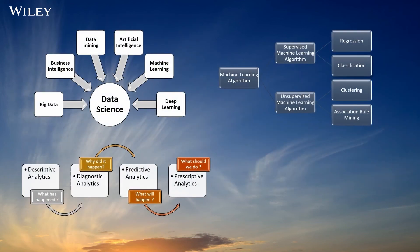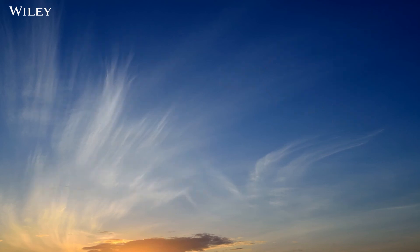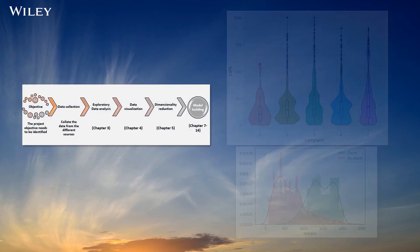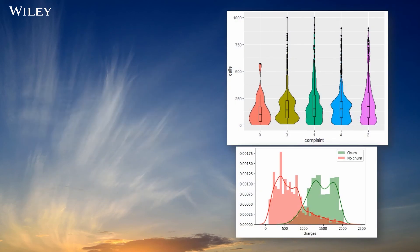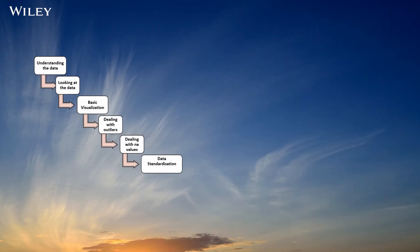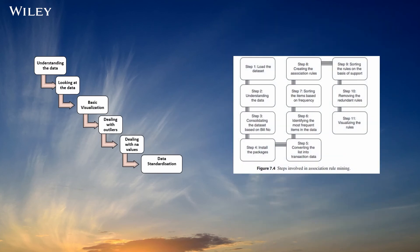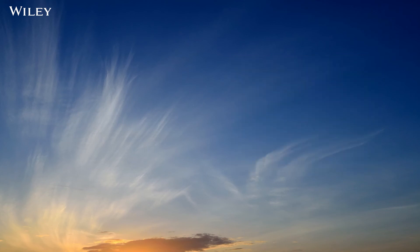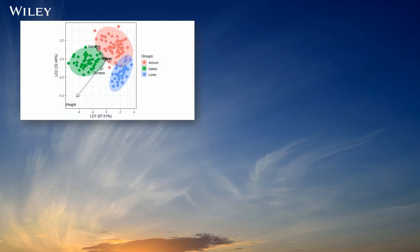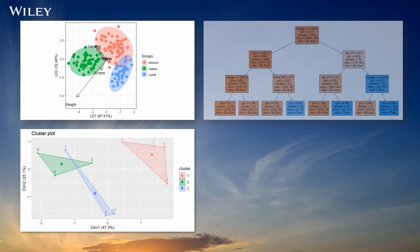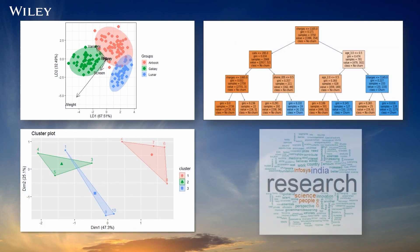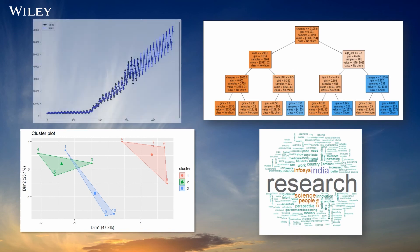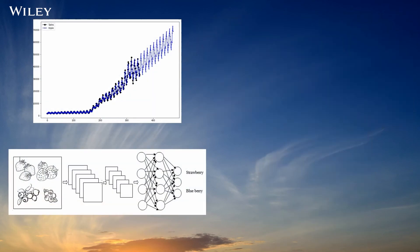Some excerpts from the book include diagrammatic representation of concepts, process flow of chapters, visual representation of graphs and plots, process flow diagrams, and algorithms represented as step-by-step processes. Outputs of the algorithms are presented clearly with explanations, such as linear discriminant analysis, cluster plots, text analytics, decision tree, time series forecasting, deep learning models, and dashboards.